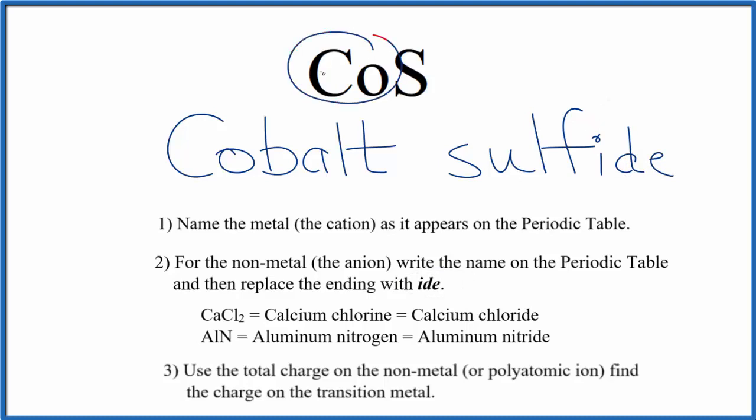But since cobalt is a transition metal, we need to write the charge between the names. So we know that sulfur forms the sulfide ion, which is two minus. Cobalt then, it has to be two plus. So we're going to put Roman numeral two in parentheses between the names.